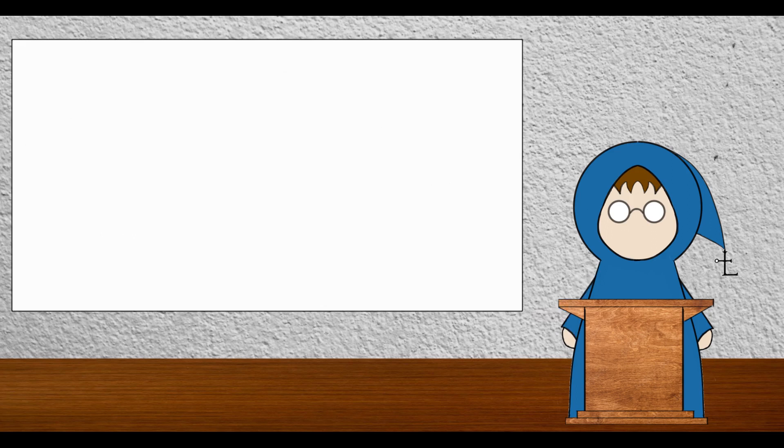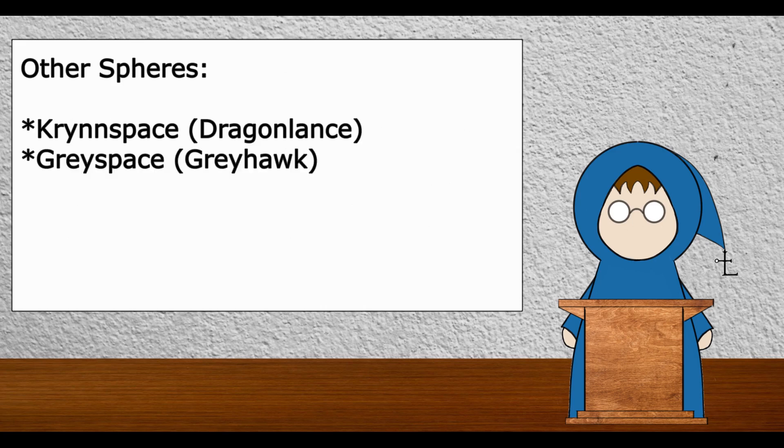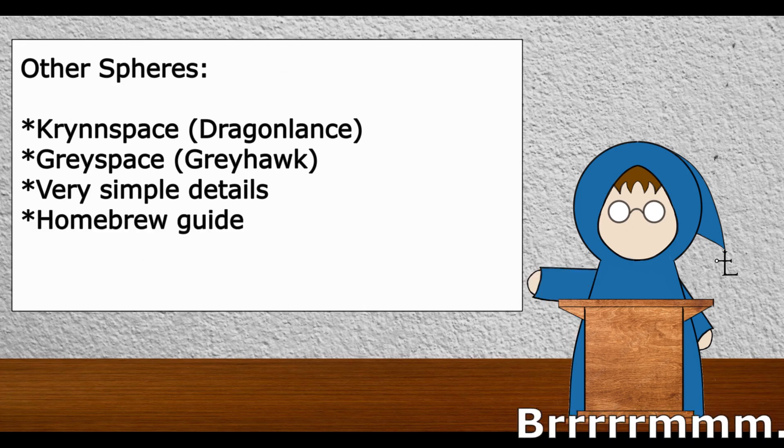The chapter following that, I think, will be focused on very simple descriptions of Krynnspace and Greyspace, just planets, moons, and their most basic info. The later part of the chapter contains a general guide on how to create your own spheres.